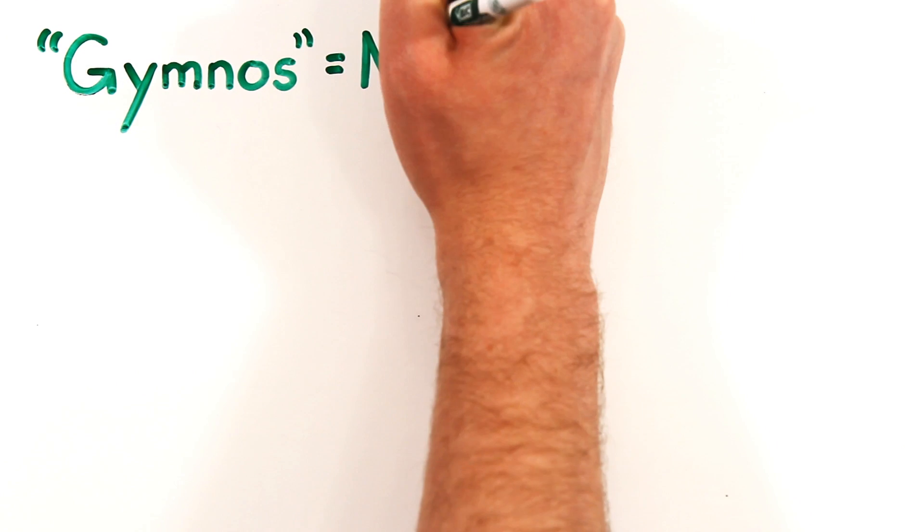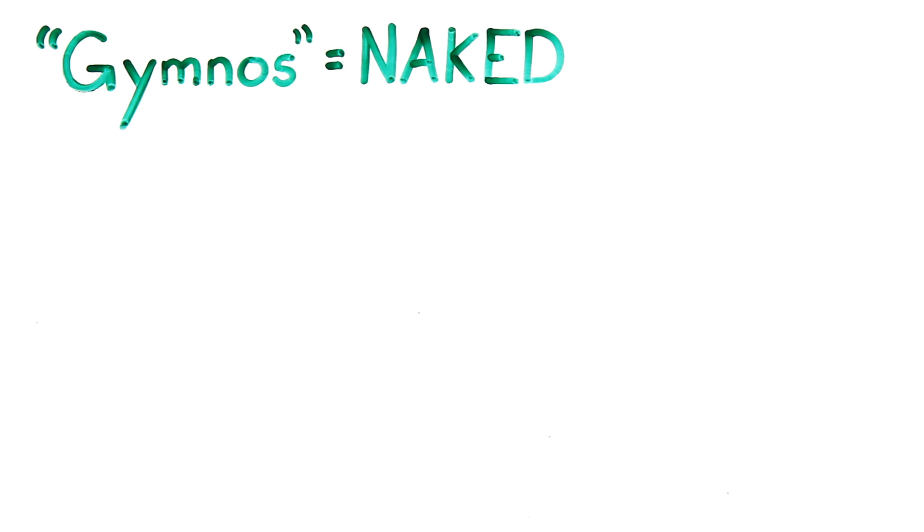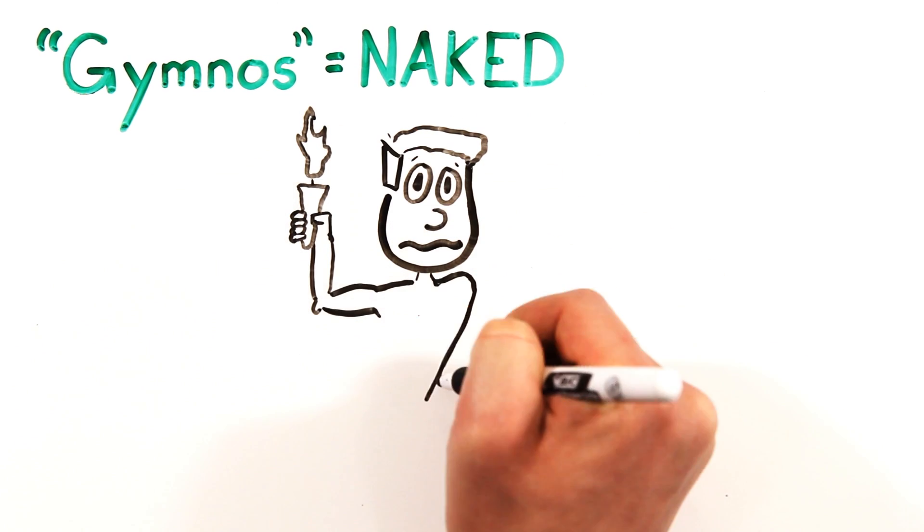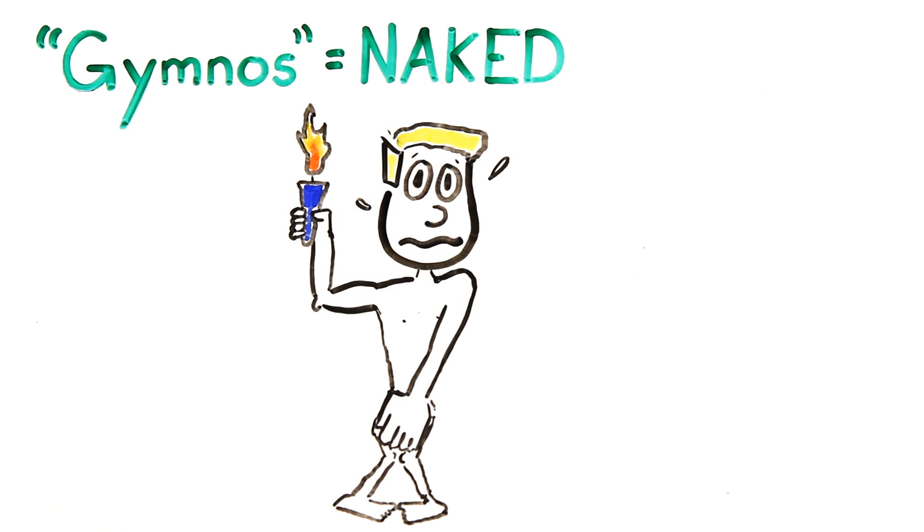And while the Olympians may train in gymnasiums, the word gymnasium actually comes from the Greek word gymnos meaning naked. So, it's no surprise that ancient Greeks competing in the Olympics were completely nude.